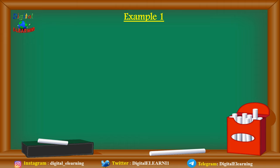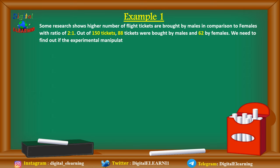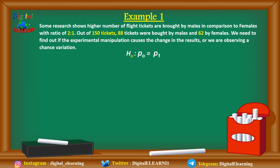In the first example, a study shows that a higher number of flight tickets are bought by males compared to females, with a ratio of 2 to 1. Out of 150 tickets, 88 were bought by males and 62 by females. We need to determine if the experimental result reflects a true effect or just chance variation. The null hypothesis is that there is no difference, and the alternate hypothesis is that they are not the same.